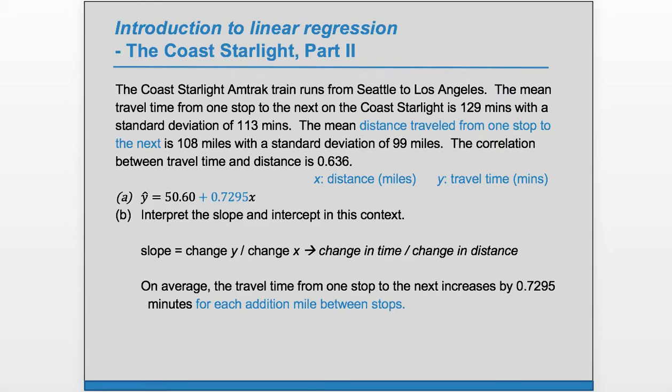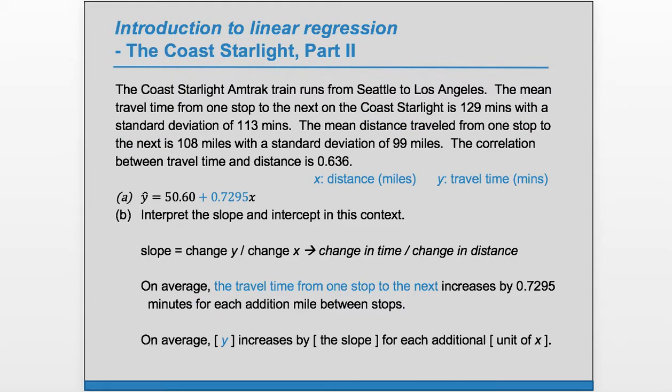So what we're saying is on average, y increases by this much for each additional one value, each additional one unit of x. So on average, y, whatever it is, increases by the slope for each additional unit of x. In this case, a unit of x is a mile.